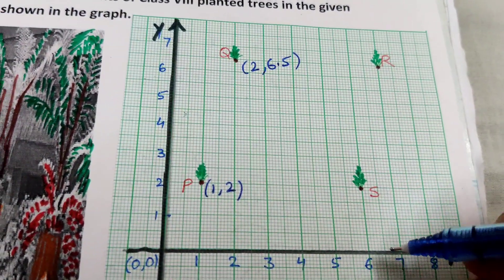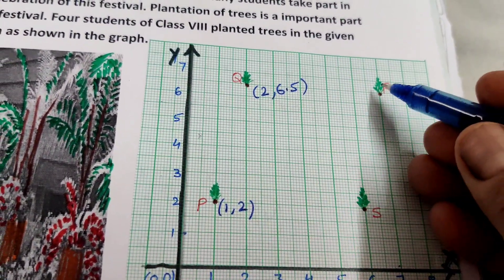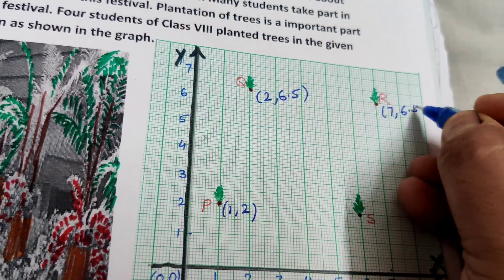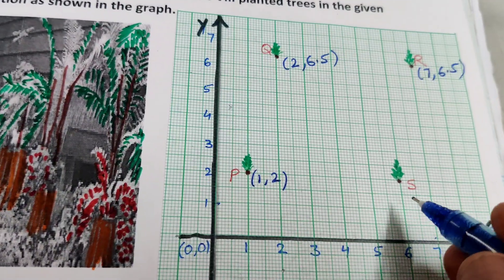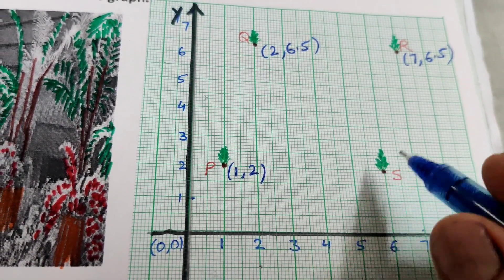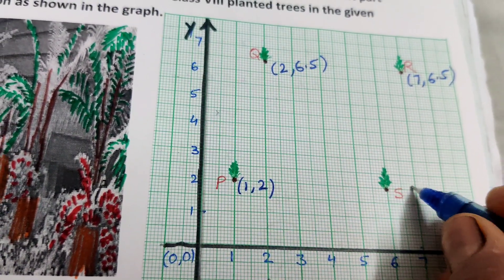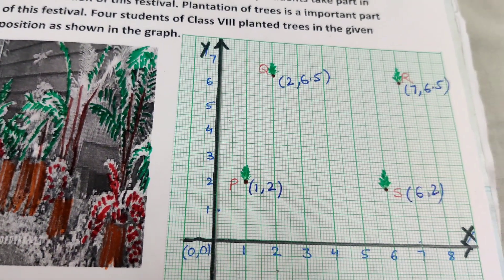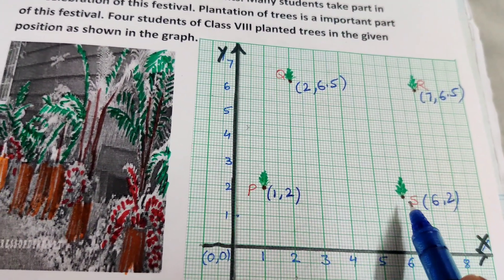And the coordinates of R, from here 7 and 6.5. And the last S, 6 and 2. Now the coordinates of the points P, Q, R and S.